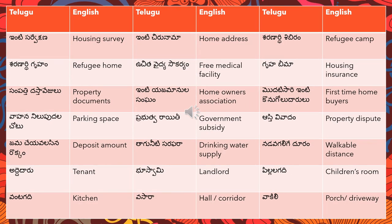'Inti sarvekshana' means housing survey. 'Inti chirunama' means home address — similar to permanent address and mailing address, sometimes they'll ask for your home address so a technician can come. In that context you say 'me inti chirunama chiptara'.